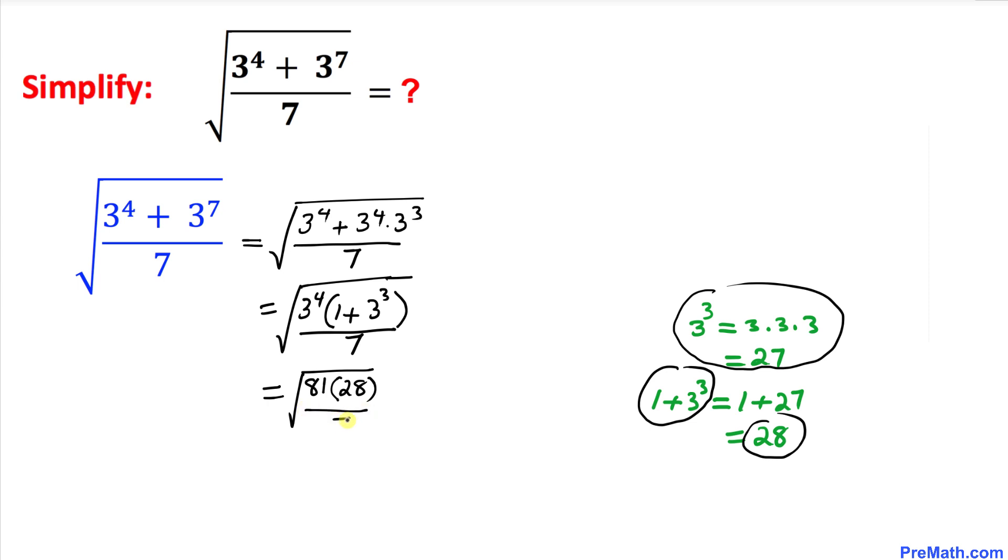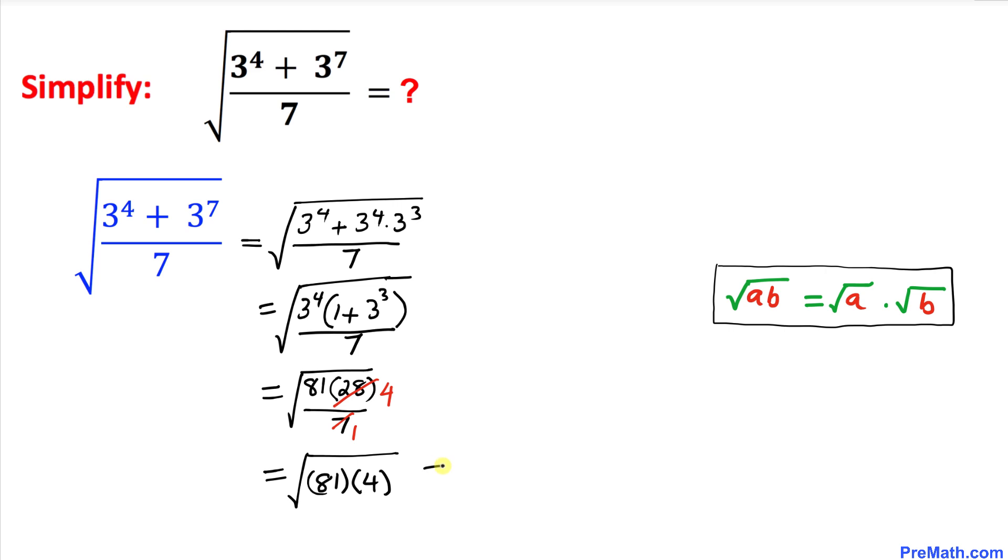Here we can see that 7 and 28 reduce to just simply 4. Thus we can write this radical in simplified form as square root of 81 times 4. And here this could be broken down to just simply square root of 81 times the square root of 4 by using this radical rule.